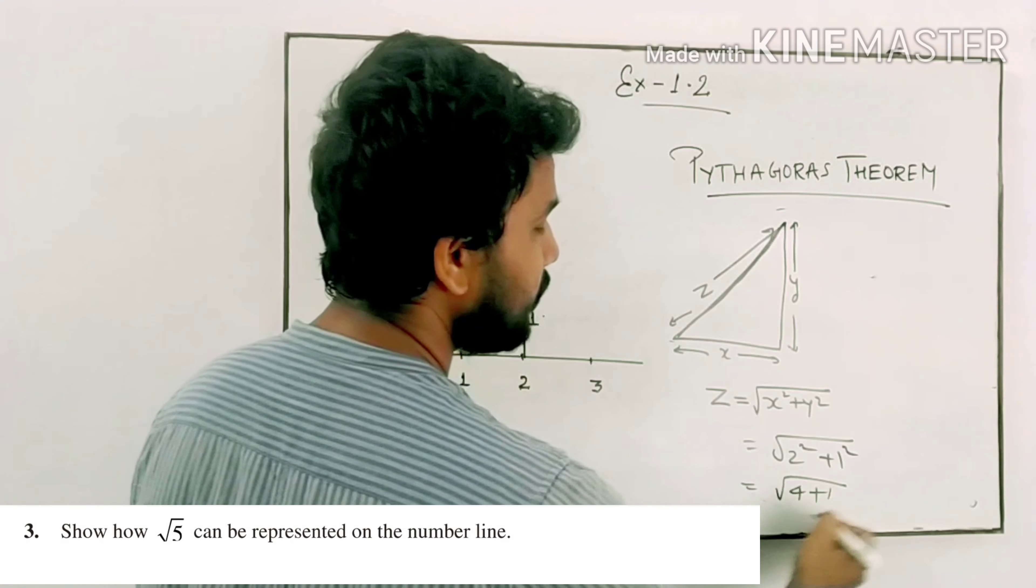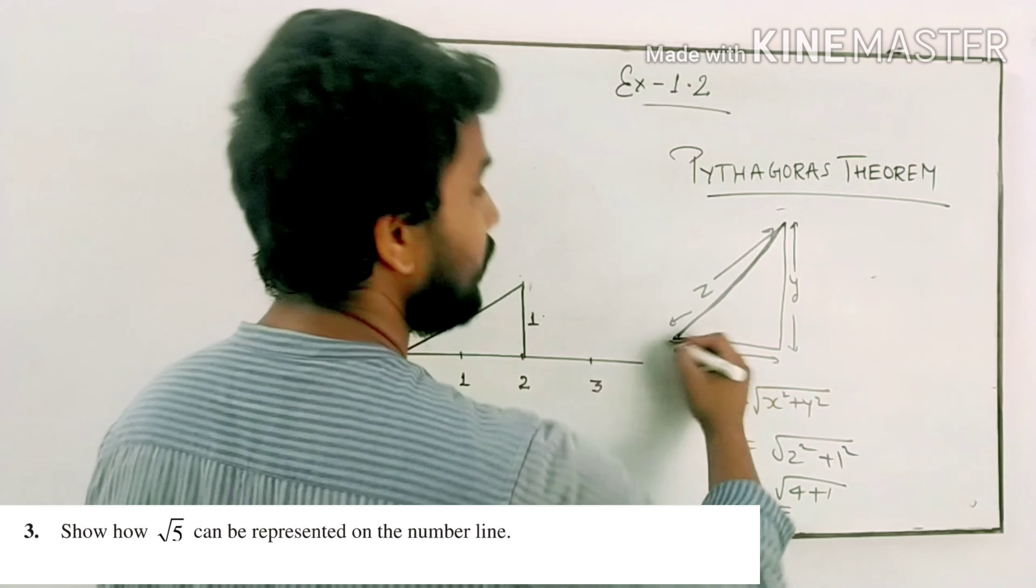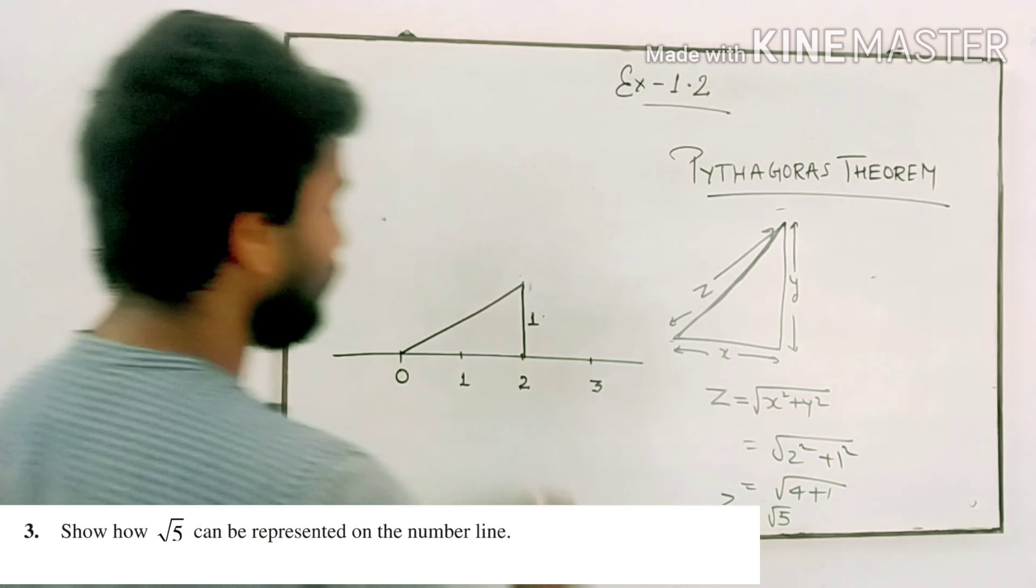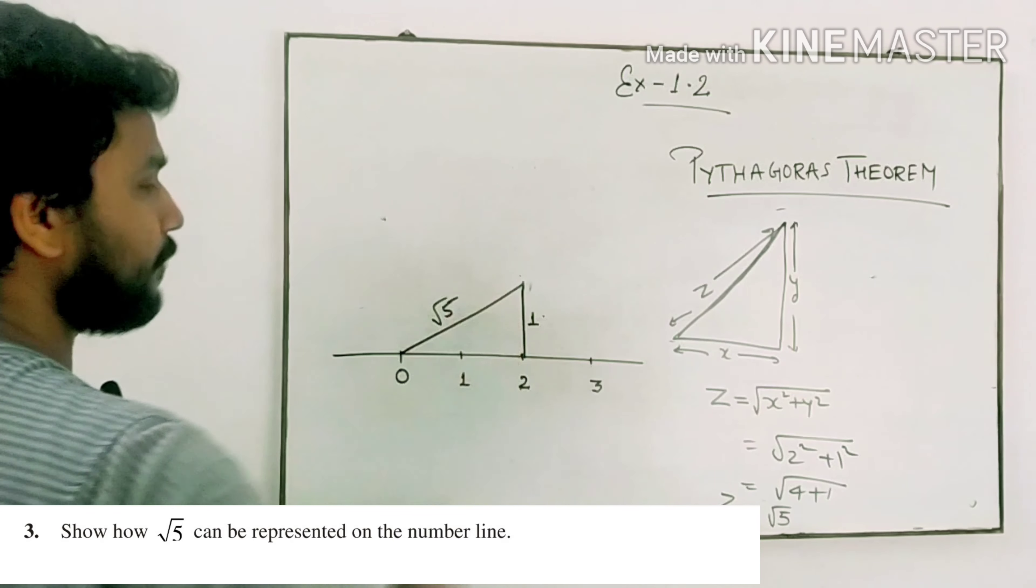Plus 1 square. So this is under root 4 plus 1, which equals under root 5. The hypotenuse value is root 5.